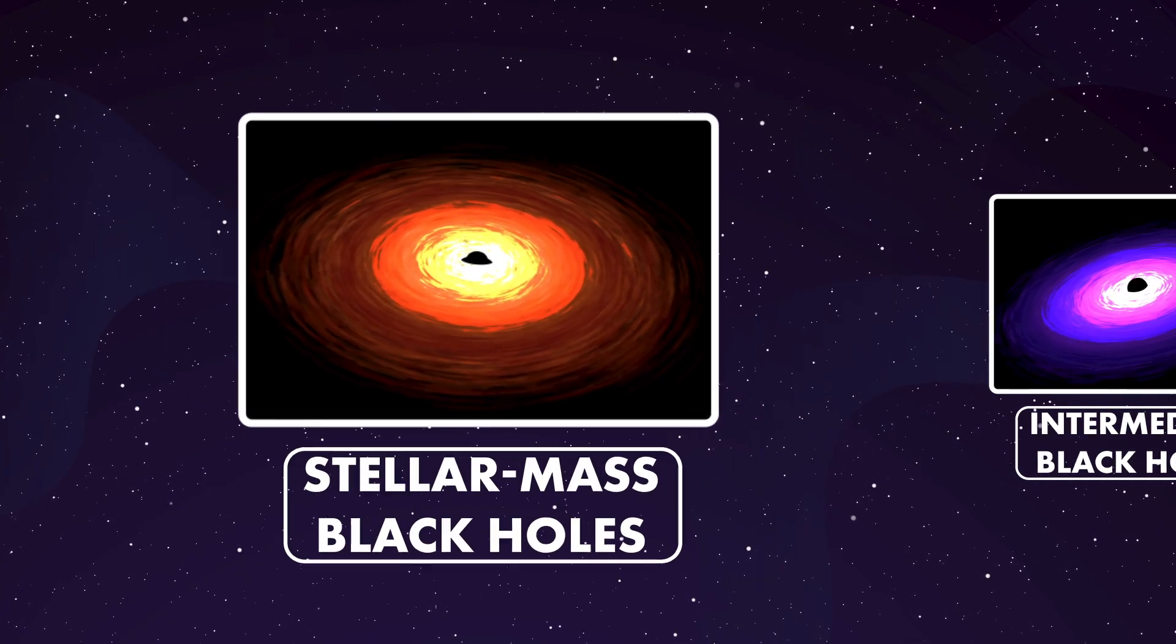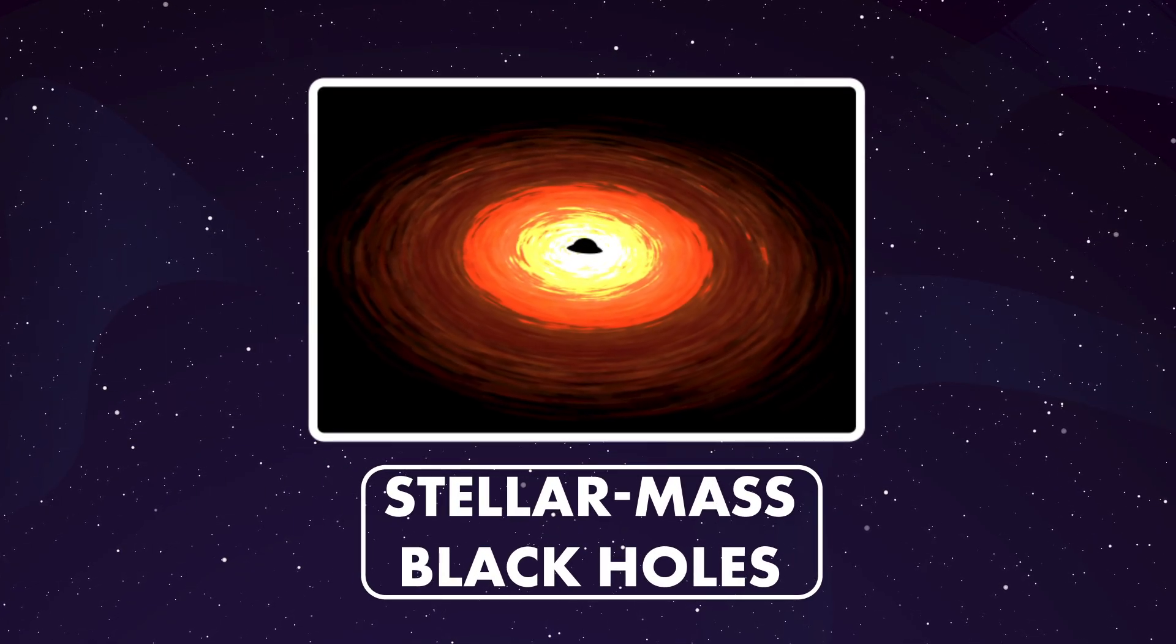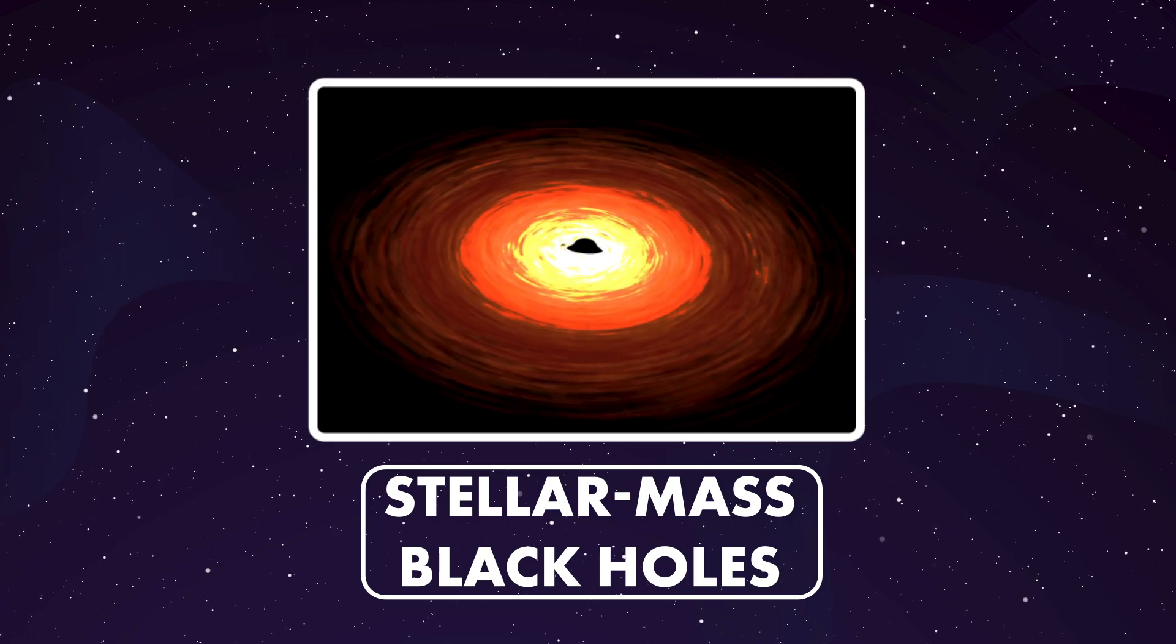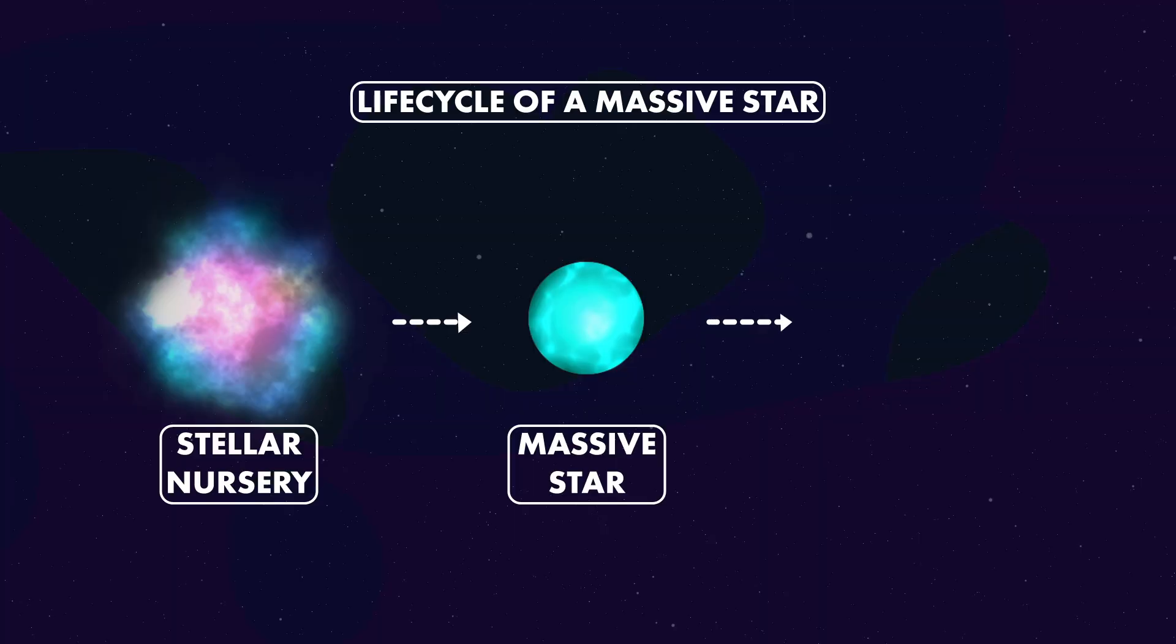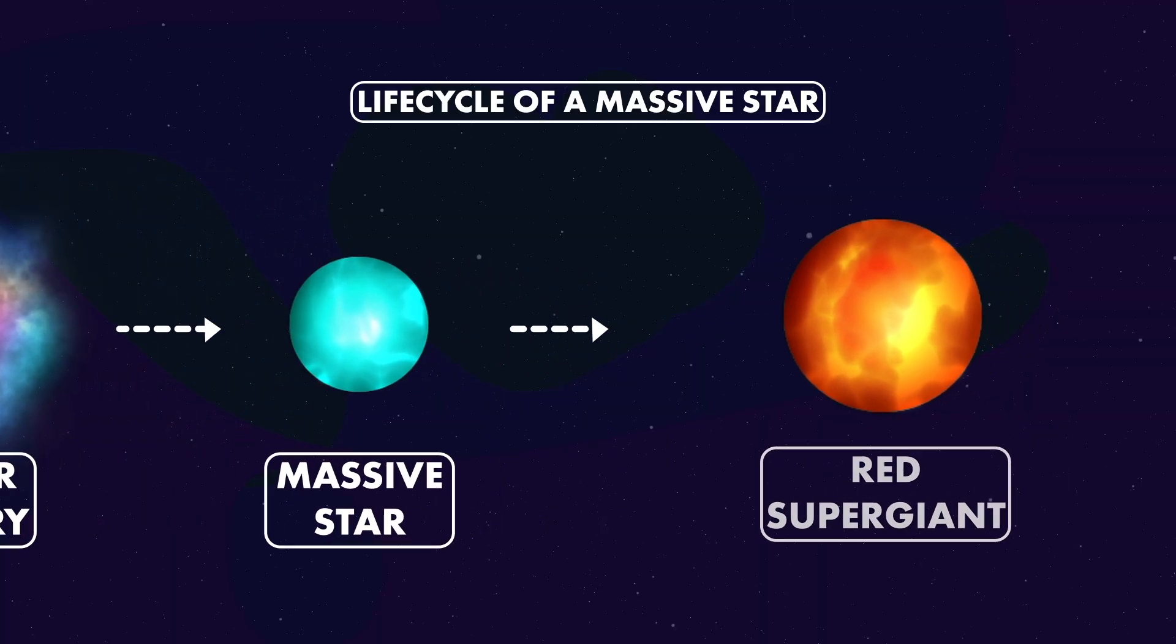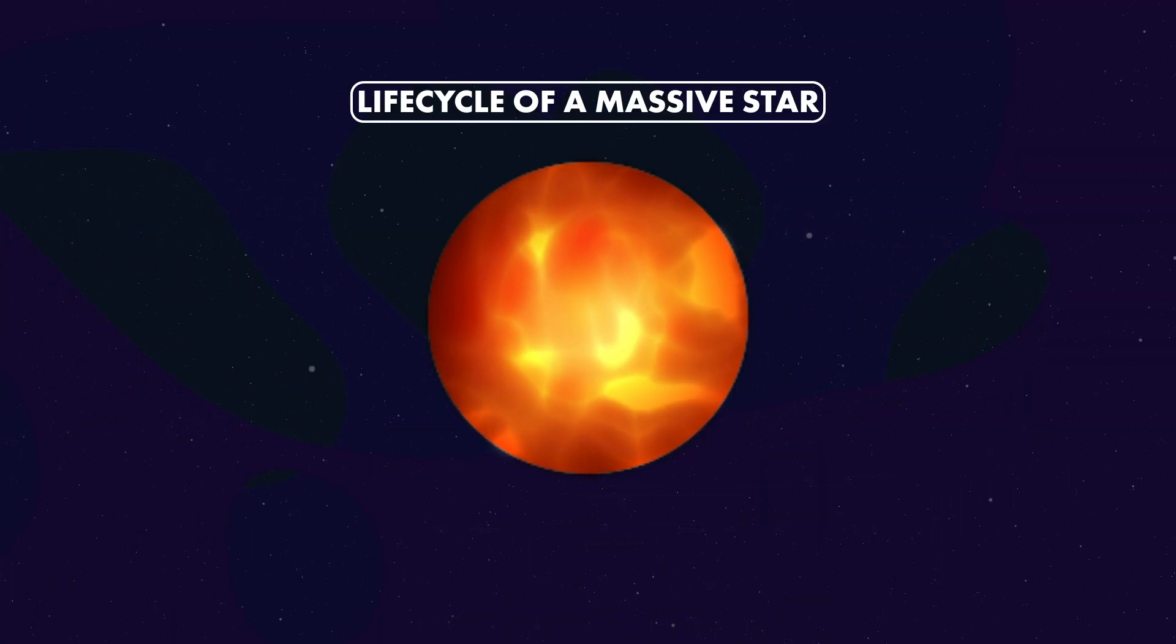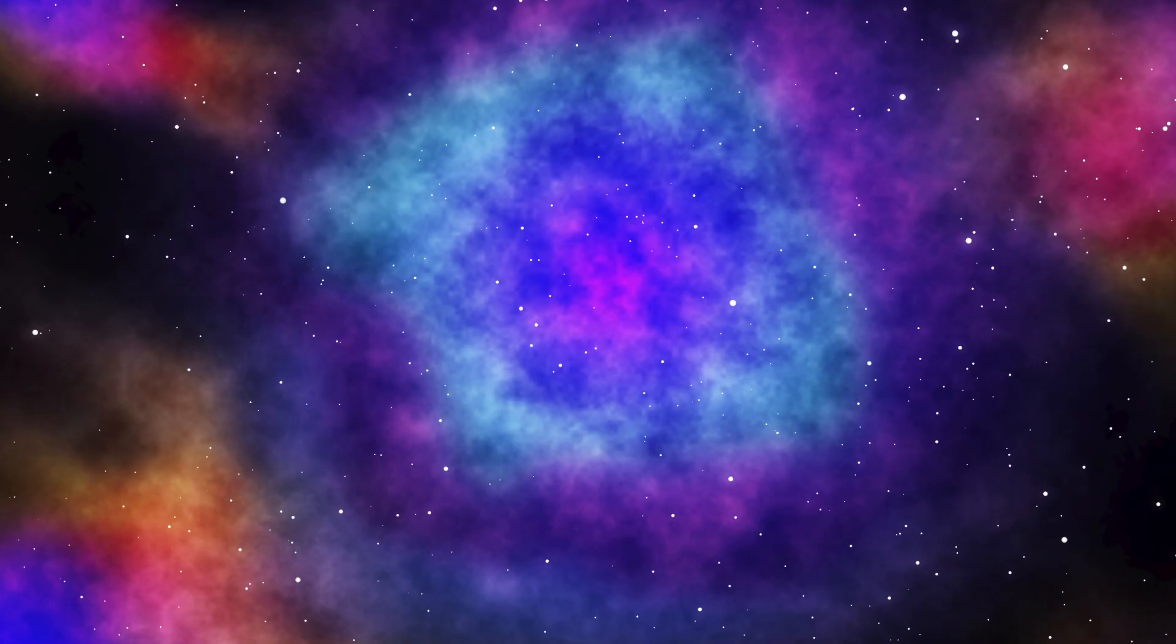The most common in our universe are stellar black holes, created when a massive star reaches the end of its life. Throughout a star's life cycle, it may expand, cool down, and change color, until it eventually runs out of fuel. When this happens, particularly massive stars explode in brilliant cosmic events known as supernovas.